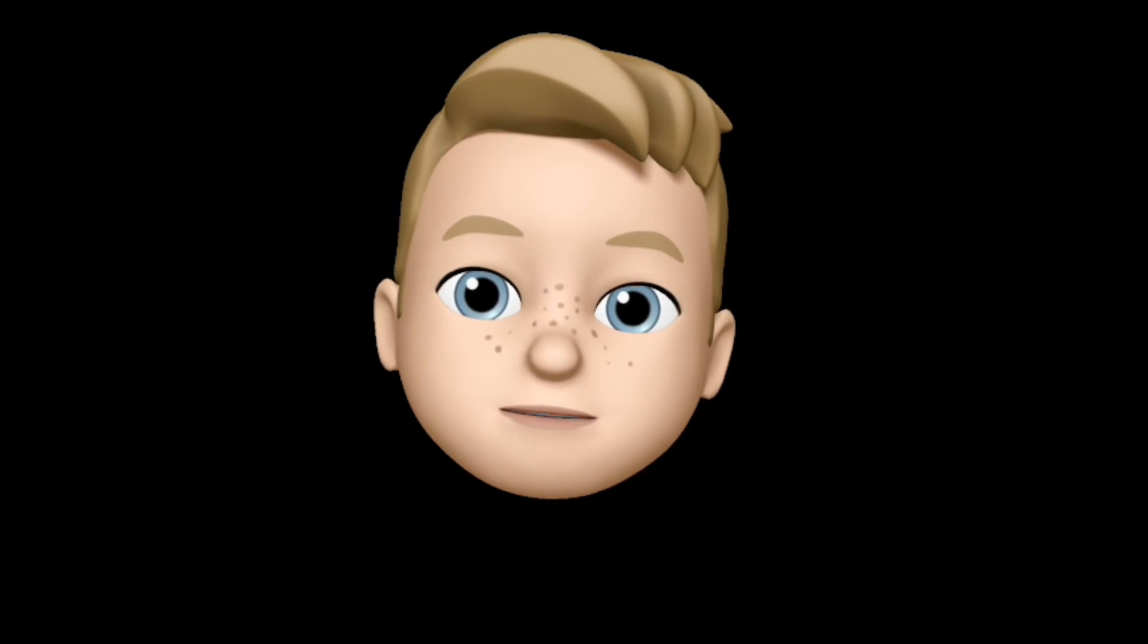Do it again! Now we do 7 divided by 7. We know that 7 times 1 equals 7. So we multiply, subtract, 7 minus 7 is 0, and bring down, and then we start over.